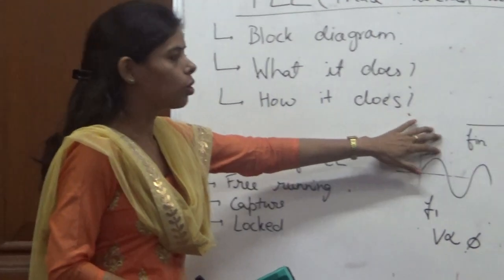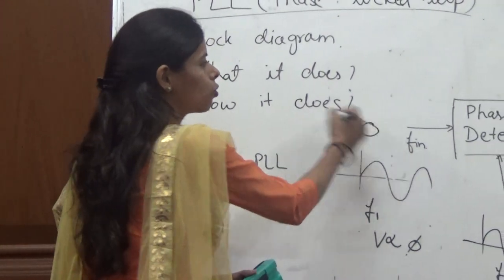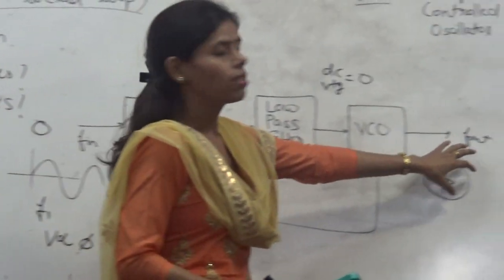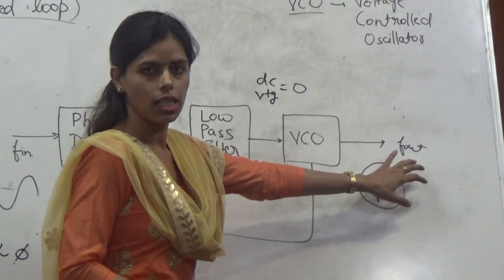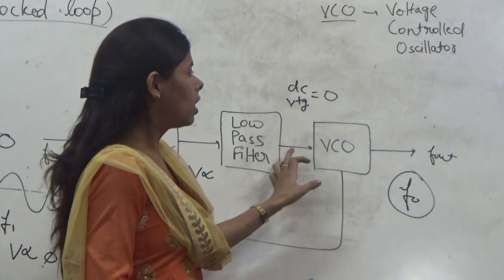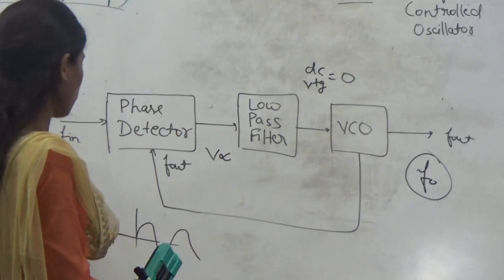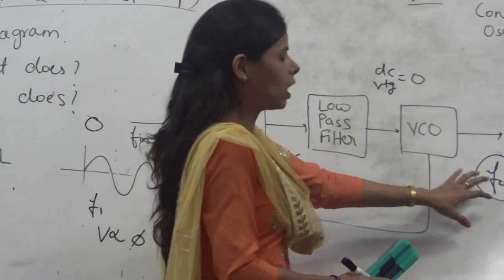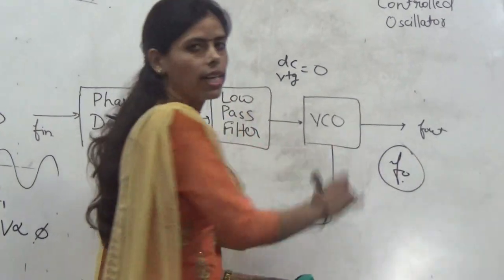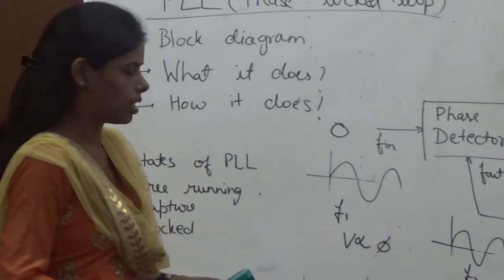If we give nothing to this PLL, we will still get some output, and that output is due to the free running frequency of the VCO. That means if we give no input to the PLL, we will have a signal of frequency F0 at the output. This state of the PLL is the free running state.